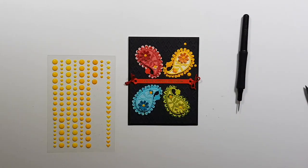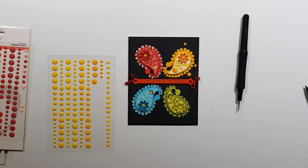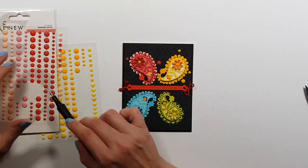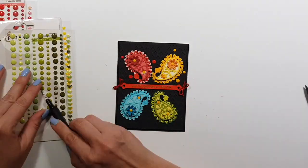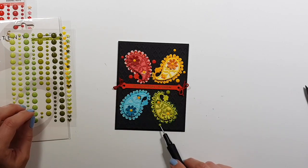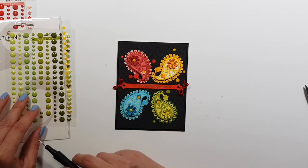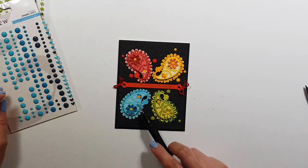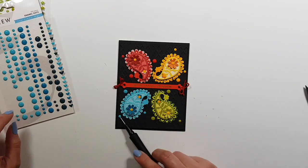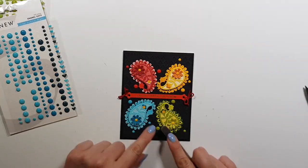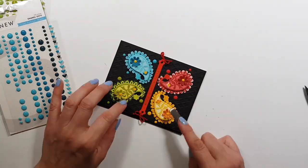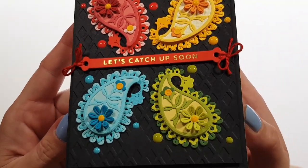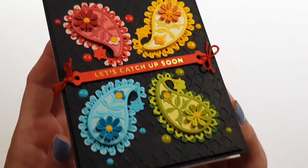And then I come in with some enamel dots and do a tone on tone kind of thing. So I'm placing yellow enamel dots around the yellow shape and then red and blue and green next to the same color paisley. And I'm kind of trying to add these randomly, just so that nothing is symmetrical. I don't know what my problem is with symmetry, but that kind of is always the case.